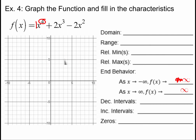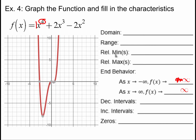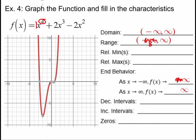Here's what the graph looks like. The domain is negative infinity to positive infinity since the graph goes forever left and right. For the range, the lowest point is at negative 8 and it goes up to infinity, so the range is negative 8 to infinity. There are two relative minimums: one at (−2, −8) and one at approximately (0.5, −0.9).